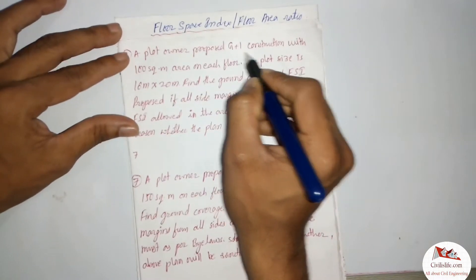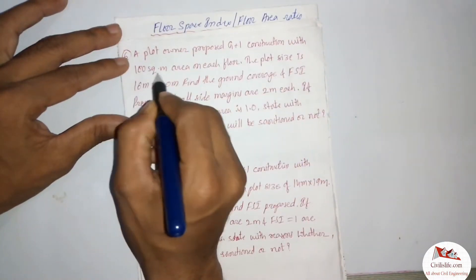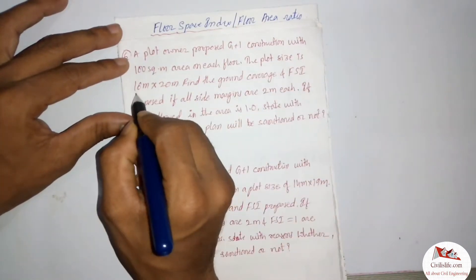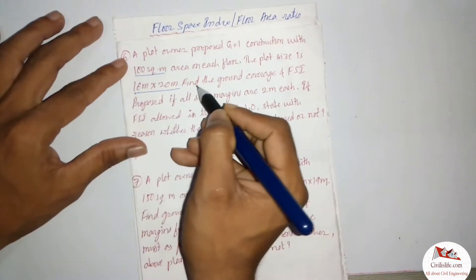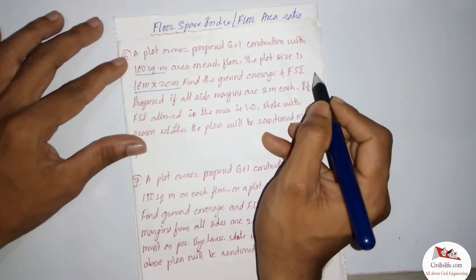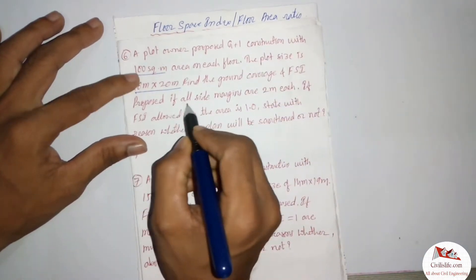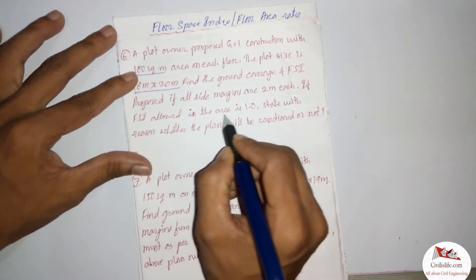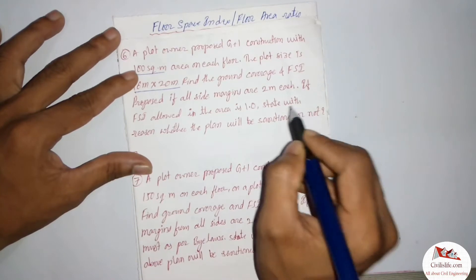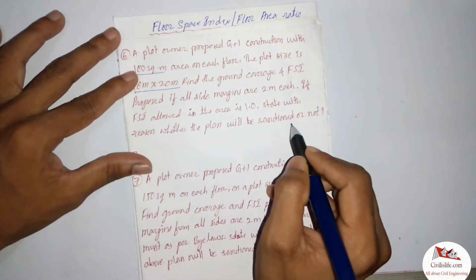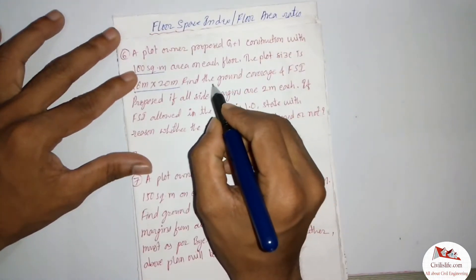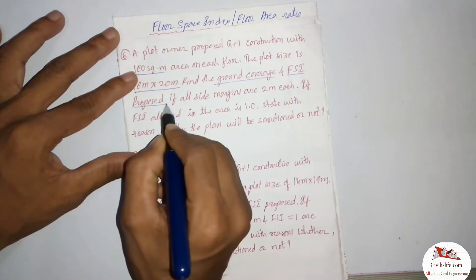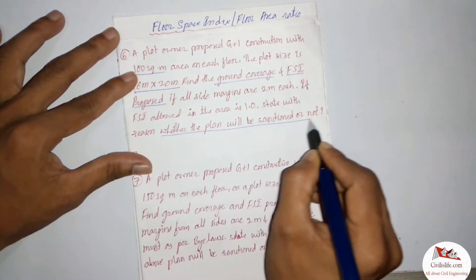A plot owner proposed G+1 construction with 100 square meter area on each floor. The plot size is 16 meter by 20 meter. Find ground coverage and FSI proposed if all side margins are 2 meter each. If FSI allowed in the area is 1.0, state with reason whether the plan will be sanctioned or not. We have to find the ground coverage and the FSI proposed.